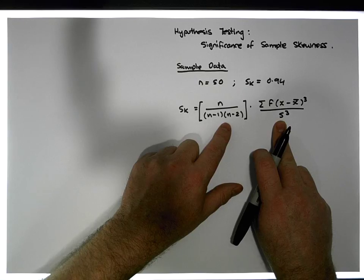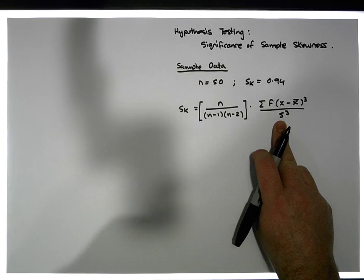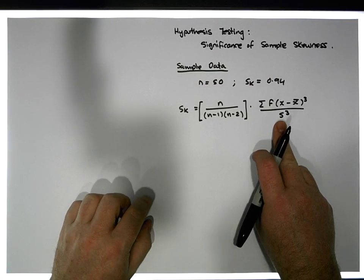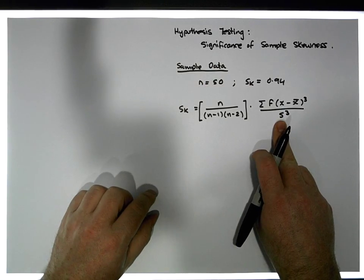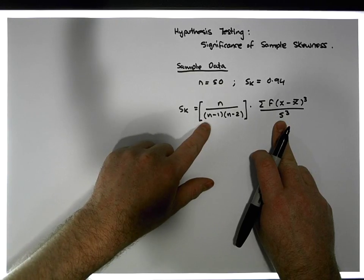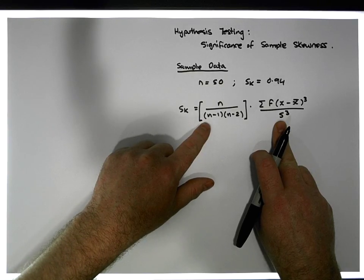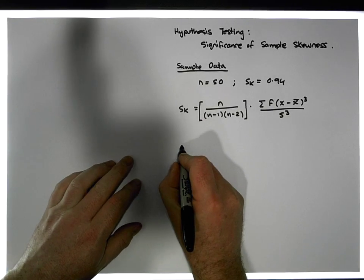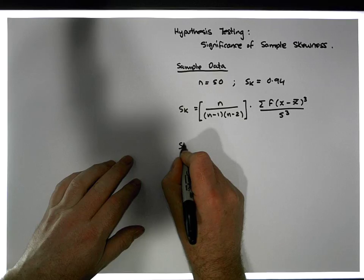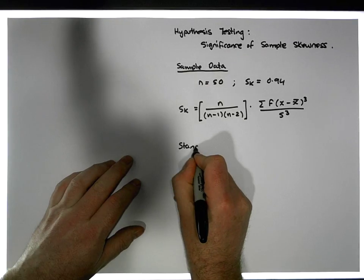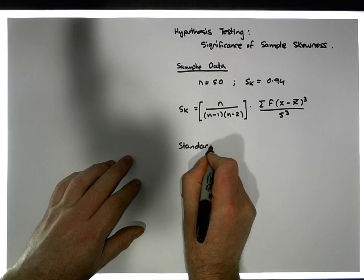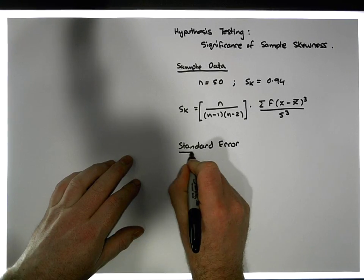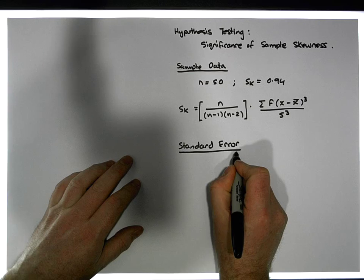To calculate the significance of a sample skewness value, we need to know what the standard error of the distribution is, and we also need to know what our test statistic is.